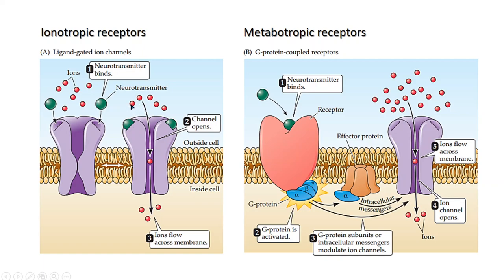If the ion that enters the cell when the channel opens is negatively charged, it will hyperpolarize the membrane. Because of this hyperpolarization, the cell will become more difficult to excite, since it has increased the threshold for initiating an action potential. So the overall impact on the excitability of the postsynaptic membrane depends on the type of ions moving across the membrane upon binding of the neurotransmitter.